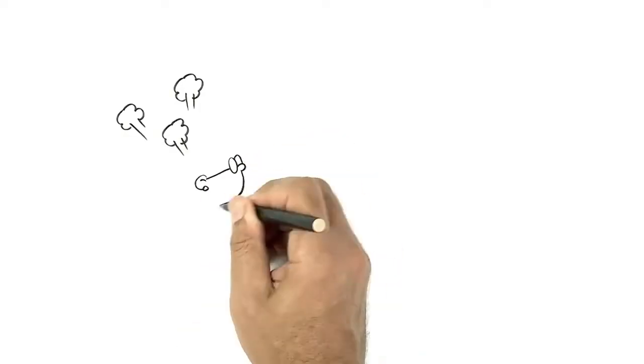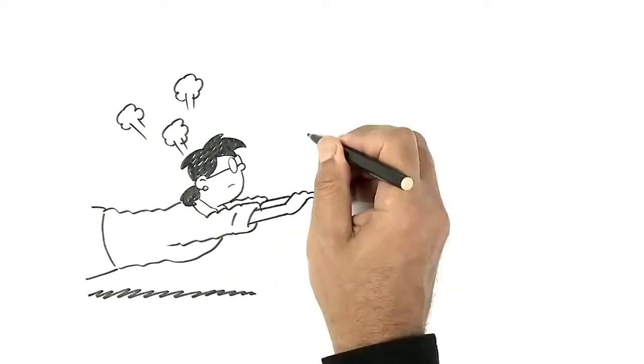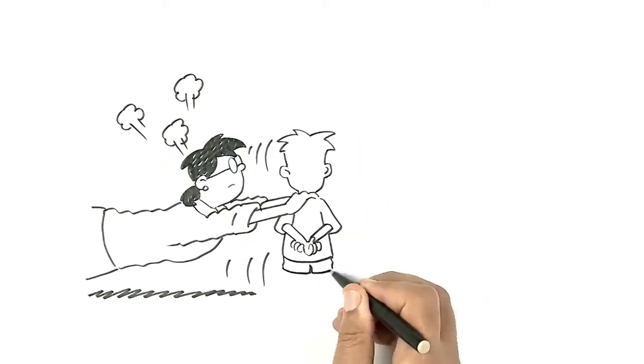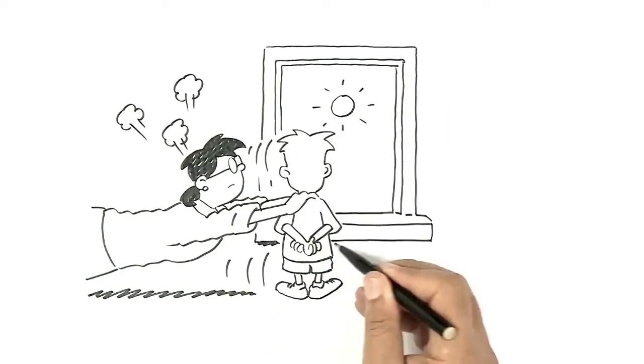How does Bob's teacher intentionally position him as a scientific enquirer and challenge and support him to notice events and phenomena around him? How does she help Bob learn to think scientifically?